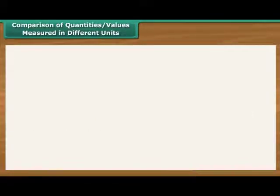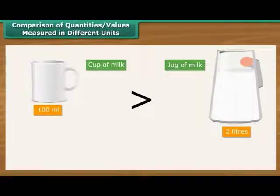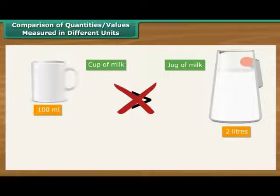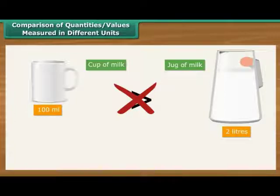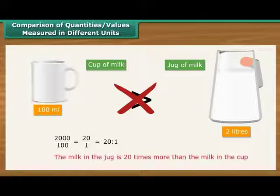Comparison of quantities and values measured in different units. Vinita has 100 millilitres of milk in a cup and 2 litres of milk in a jug. 100 is greater than 2. Can we say that the quantity of milk in the cup is greater than the quantity of milk in the jug? No. The two quantities are measured in two different units and hence cannot be compared. We should express them both in the same units. Express 2 litres as 2000 millilitres. Now the quantities are comparable. 2000 by 100 is the same as 20 is to 1. Therefore, the milk in the jug is 20 times more than the milk in the cup.